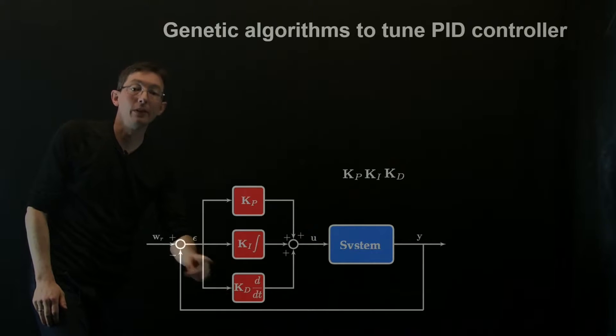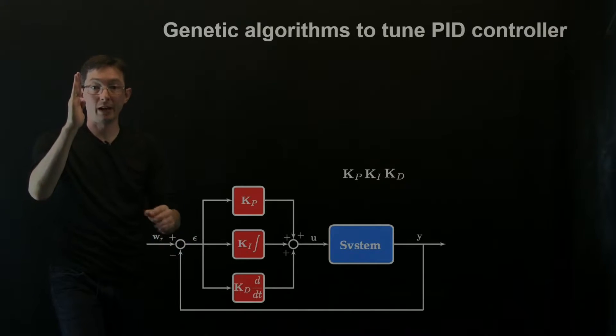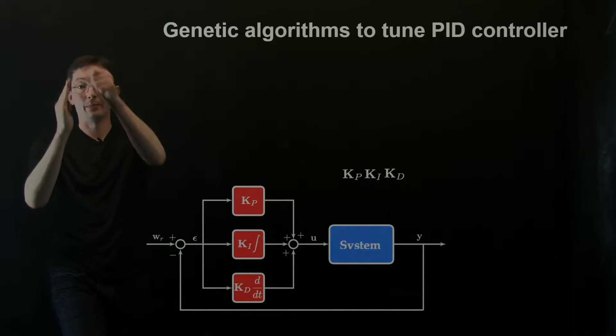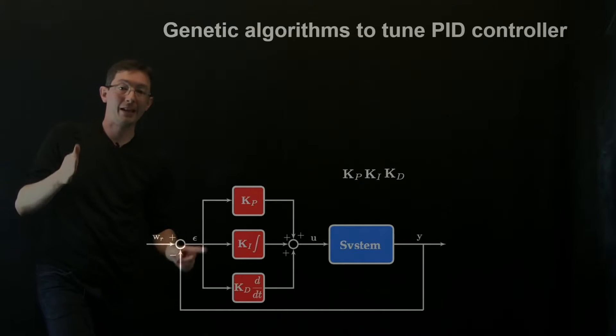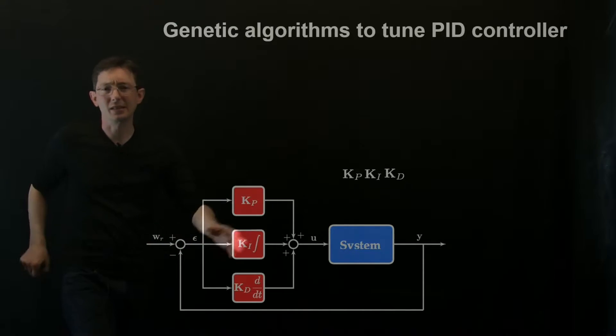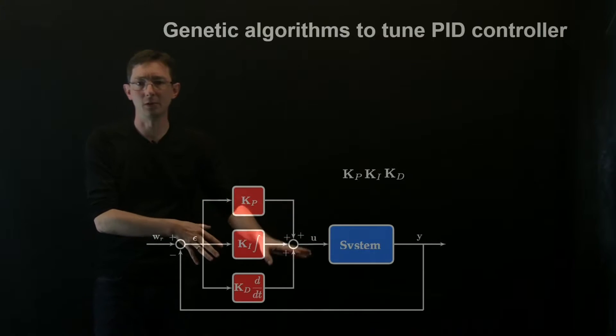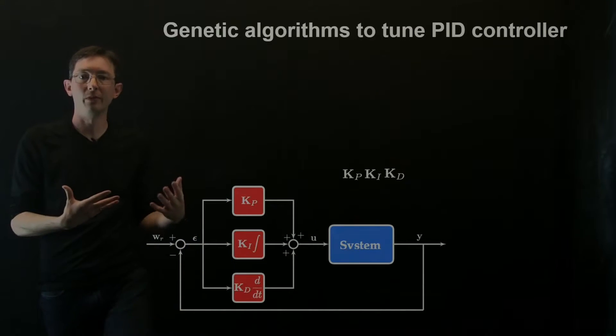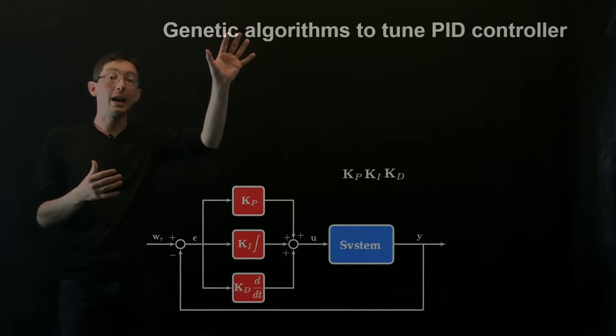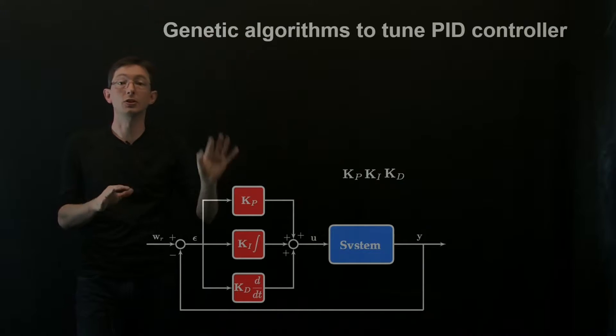And I can also have a derivative of that error. So if I have a big jump in error, my control can respond much more rapidly to those fast rises in error. So simple PID controller, this is old technology we've played around with before. What we can do now is use a genetic algorithm to tune this PID control law for some high level objective.